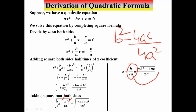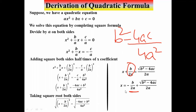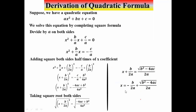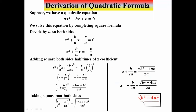We take b/2a to the right side. Since both terms have the same denominator 2a, we combine them: x = (-b ± √(b² - 4ac)) / 2a. This is our required quadratic formula.